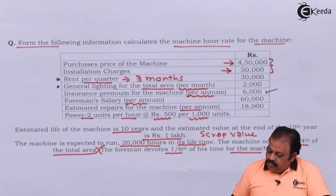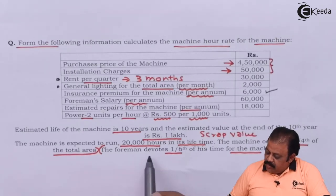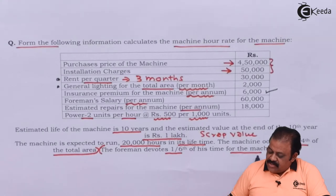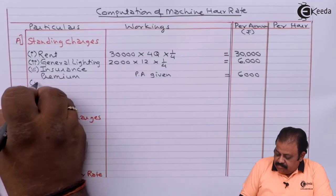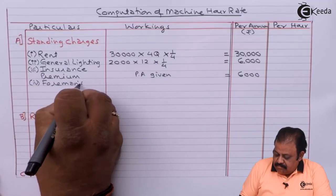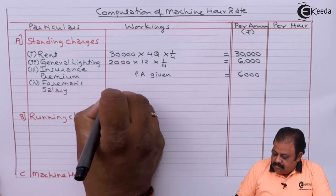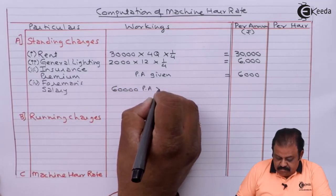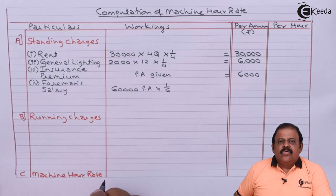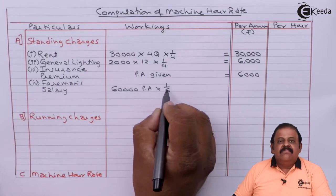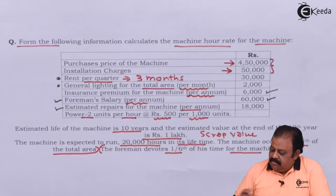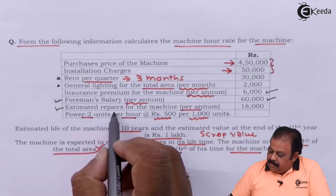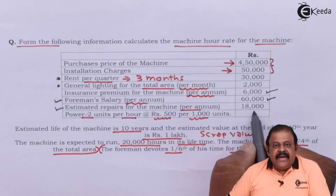Next, the foreman's salary: total salary is 60,000 per annum and he devotes one-sixth of his time for the machine, so multiply by one-sixth. Estimated repairs for the machine per annum is given as 18,000.